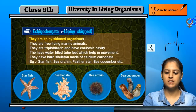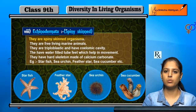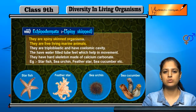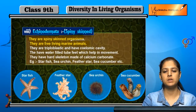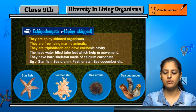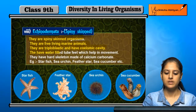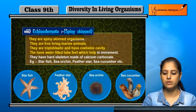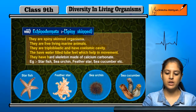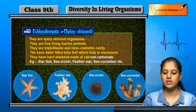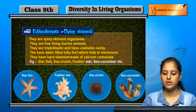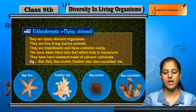Next is Echinodermata, or Spiny Skin animals. They have spines on their skin and are free-living marine animals. They are triploblastic and have a coelomic cavity. They have water-filled tube feet which help in movement, and their skeleton is made of calcium carbonate. Examples include starfish, sea urchin, feather star, sea cucumber, etc.